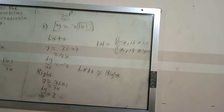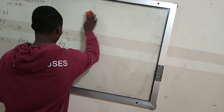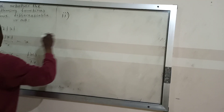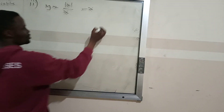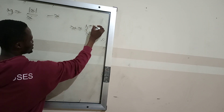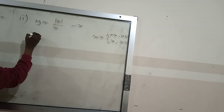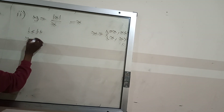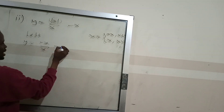Let us go to the next question, which is function ii): y equals |x| divided by x, minus x. We know that |x| equals negative x if x is less than or equal to zero, and positive x if x is greater than zero.